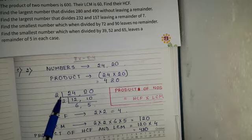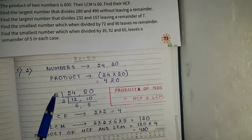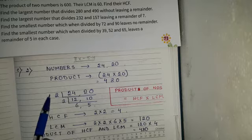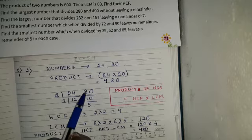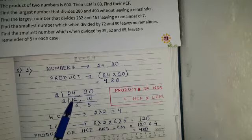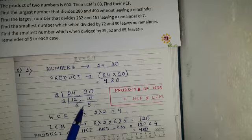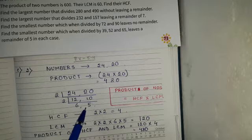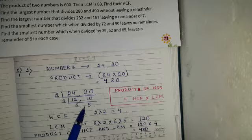24 and 20 divided by 2: 2 twelves are 24, and 2 tens are 20. Then 2 sixes are 12 and 2 fives are 10. In this step we are getting coprime numbers — 6 and 5 are coprime numbers, so we stop here.